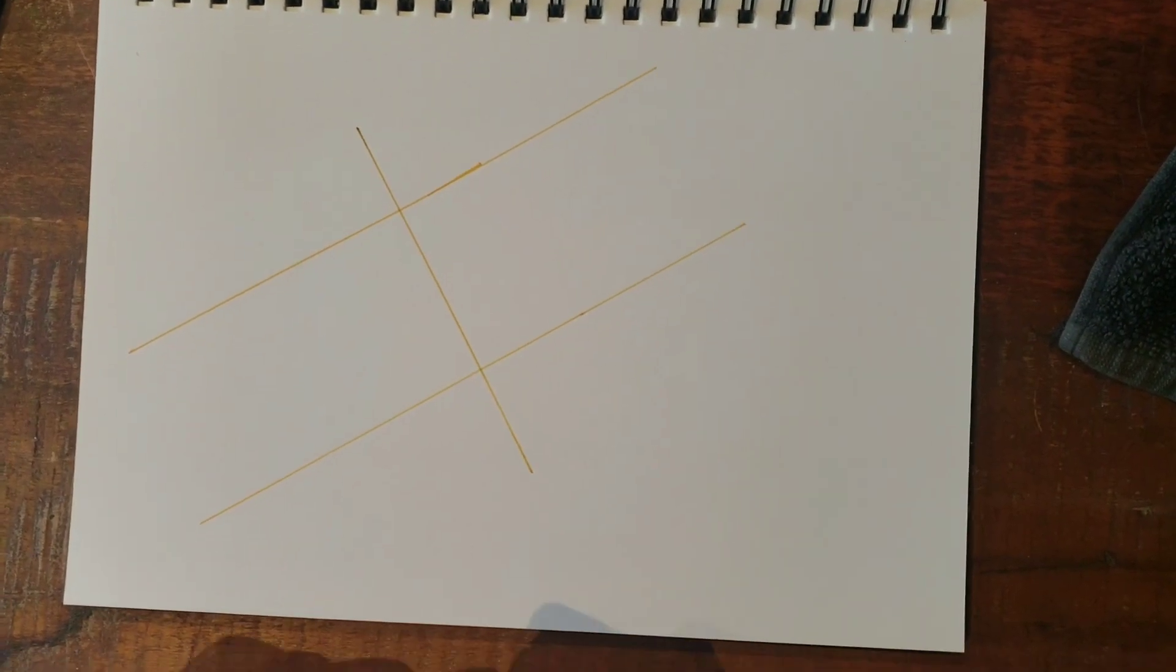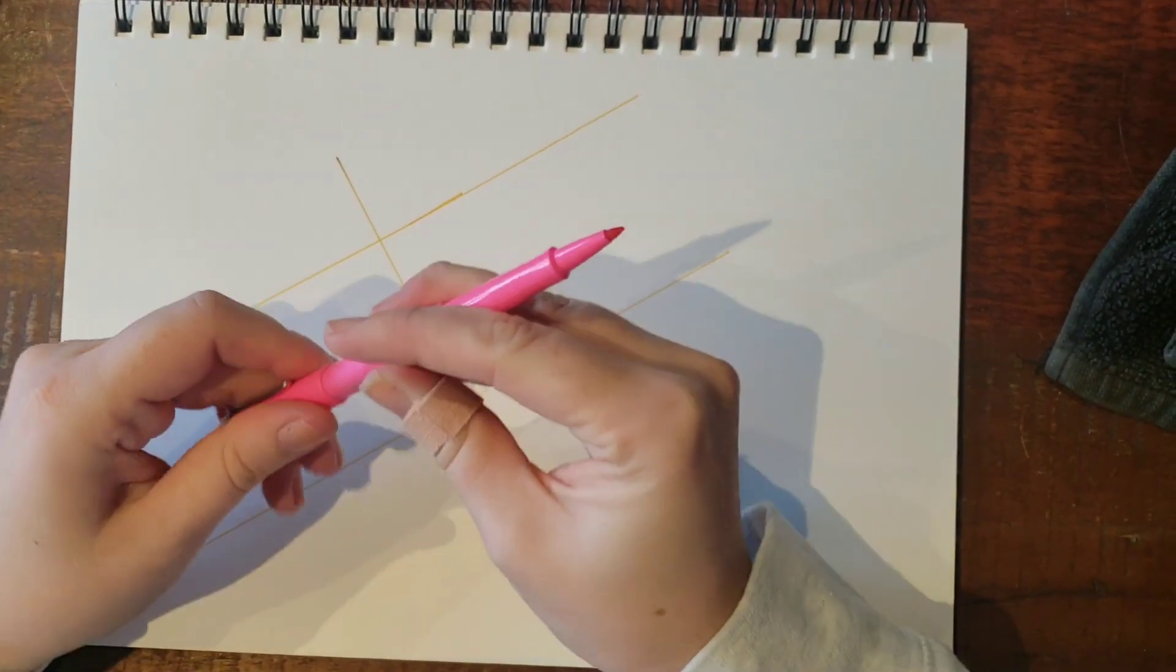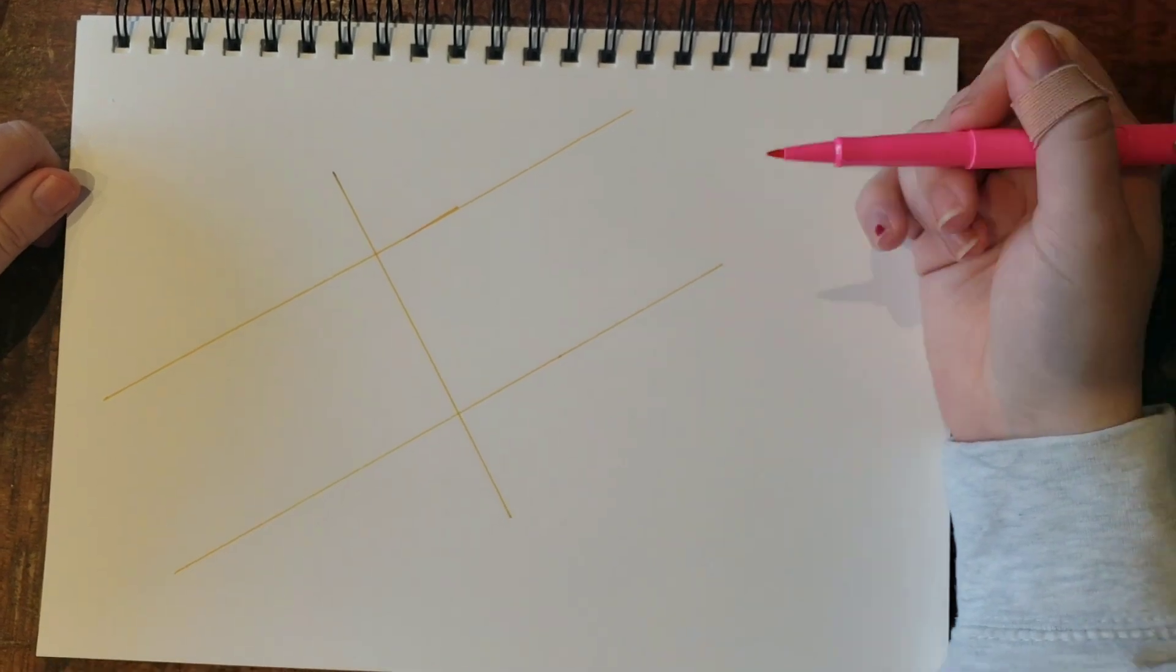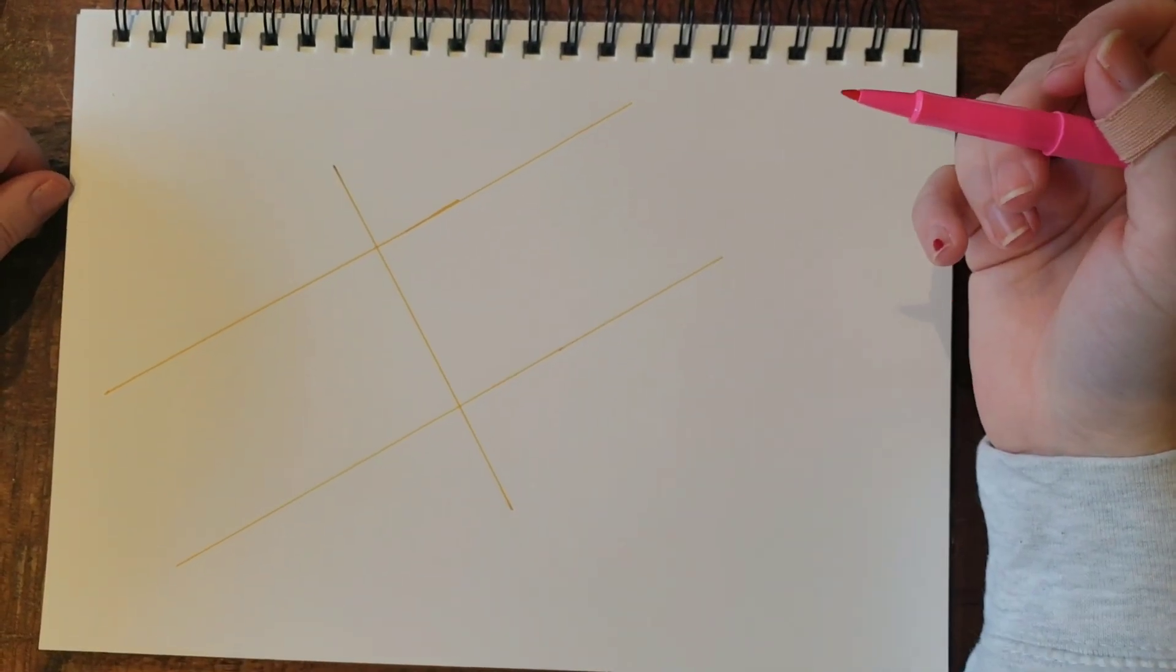So once we've got these construction lines we need to be thinking about the words that we've chosen and how many letters are in there. So I've chosen the word POW,